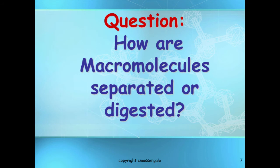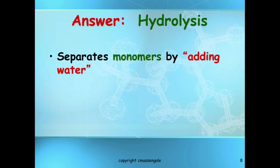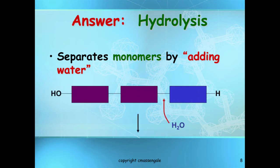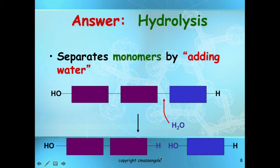How are macromolecules separated or digested? It's the exact opposite. If water is being made when you add monomers together, what do you think you need if you want to break polymers apart into monomers again? It's the exact opposite — this is called hydrolysis. Hydro means water. To separate monomers, you have to add water. If I have one big polymer and want to separate a monomer out, I add water to the reaction. It will break the bond and a hydrogen will go on one side and the OH will go on the other.